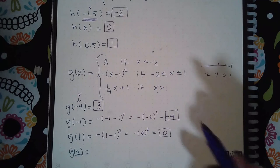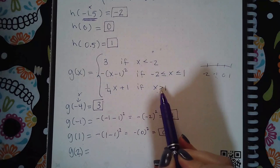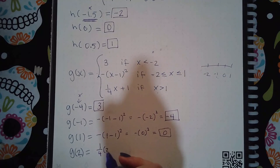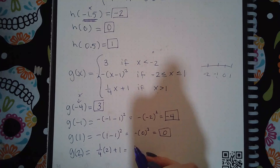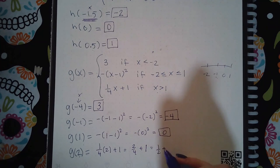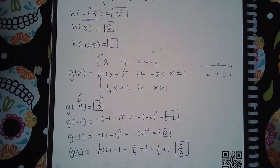Then when I plug in 2, the x value 2 is greater than 1, so I would plug it into this expression. So then I get 2 over 4 or 1 half plus 1, which is 3 halves, and I can't simplify that any further.